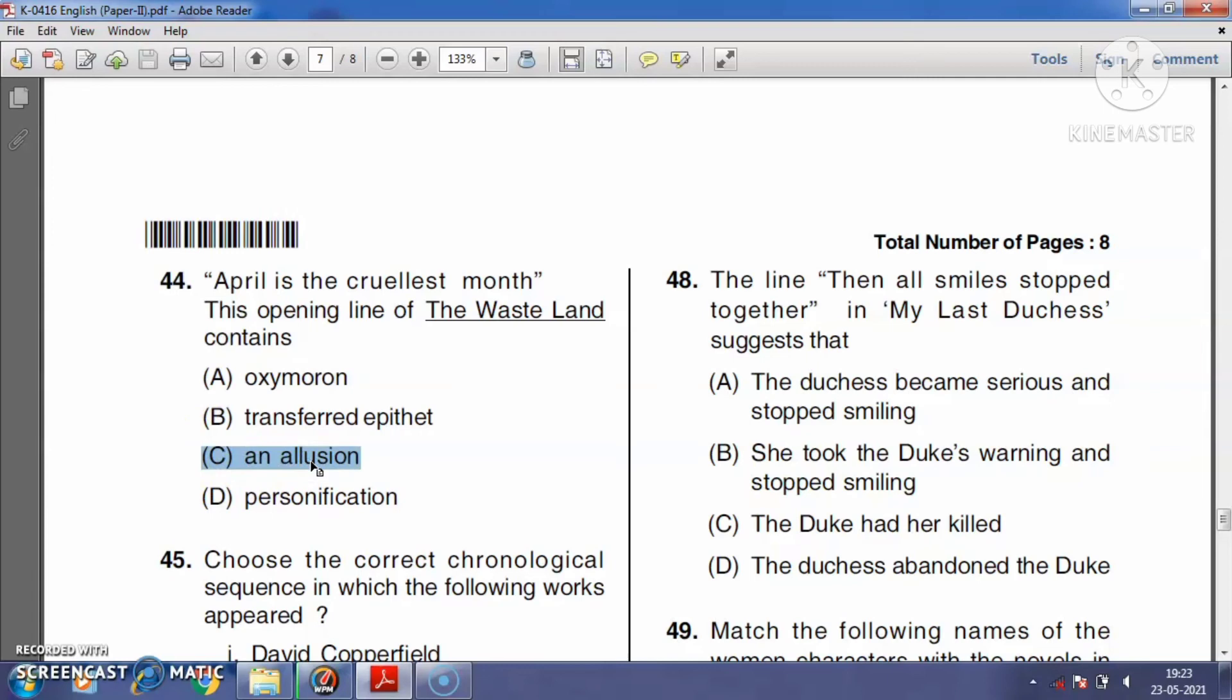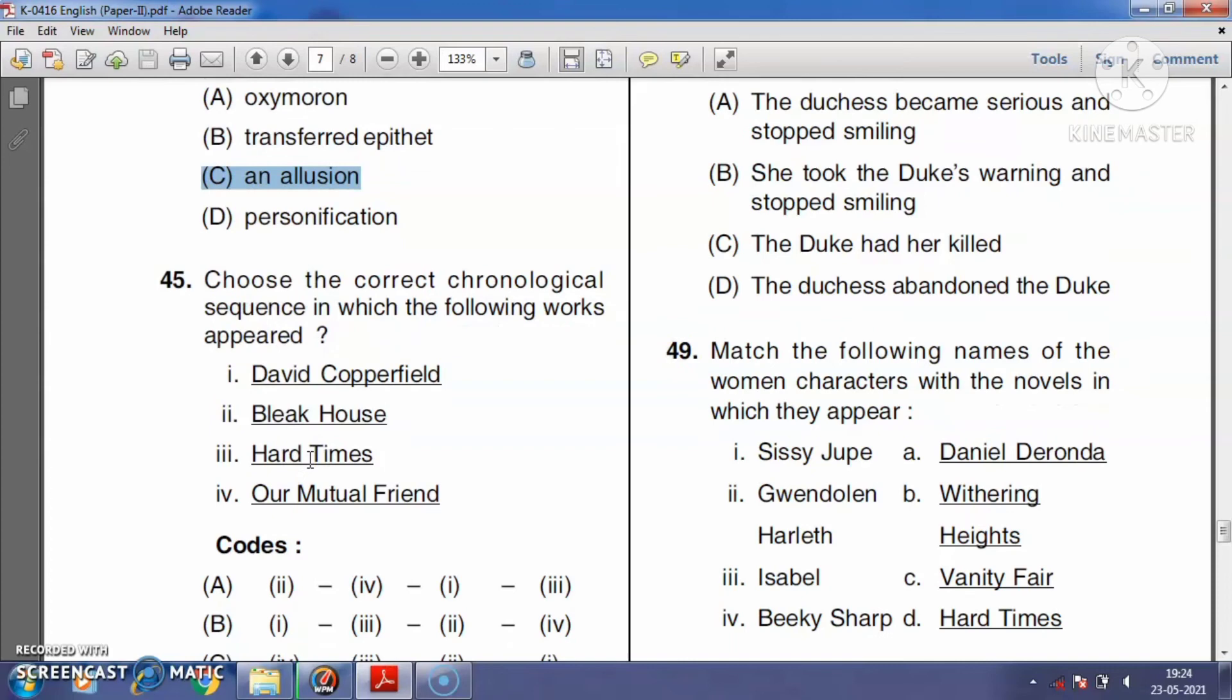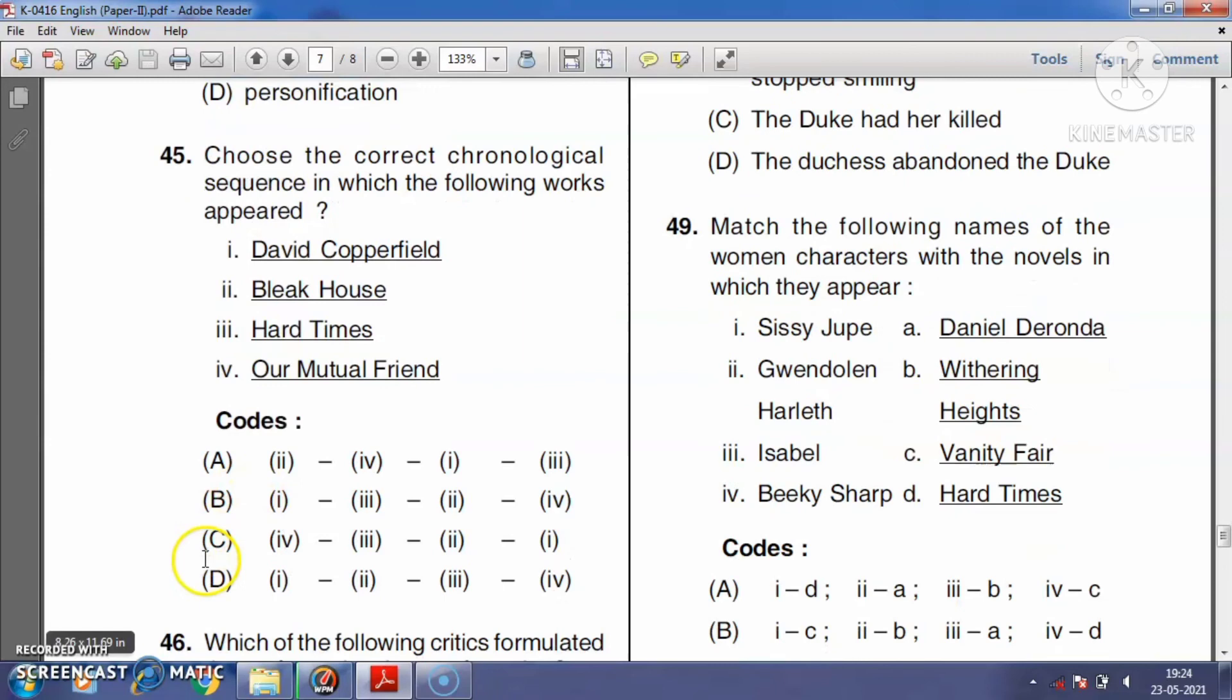Question number forty-five: Choose the correct chronological sequence in which the works appeared. David Copperfield was published in 1849, Bleak House in 1853, Hard Times in 1854, and Our Mutual Friend in 1865. The right answer is option D, which is the correct chronological order of these novels written by Charles Dickens.